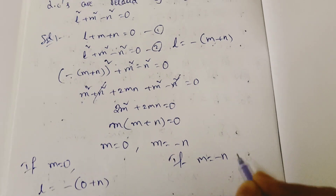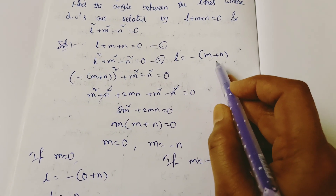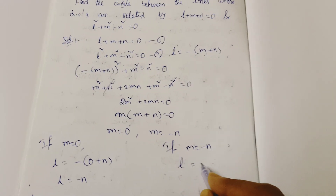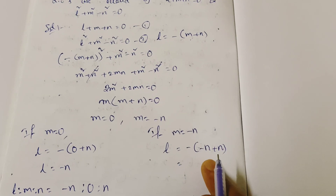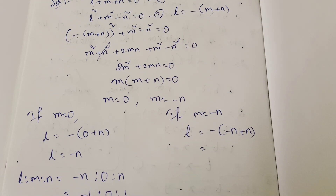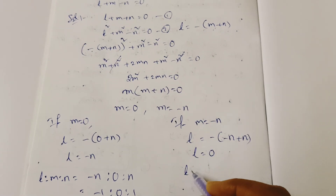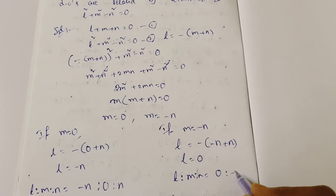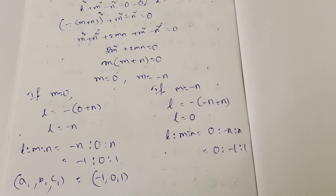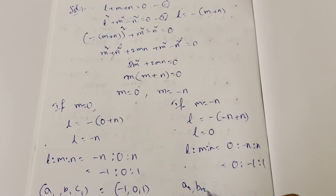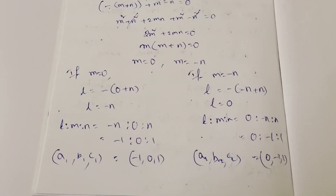Case 2: If M equal to minus N, substituting back gives L equal to minus(minus N plus N) equal to 0. So L:M:N is 0 : minus N : N, giving direction ratios a2, b2, c2 as 0, minus 1, 1.